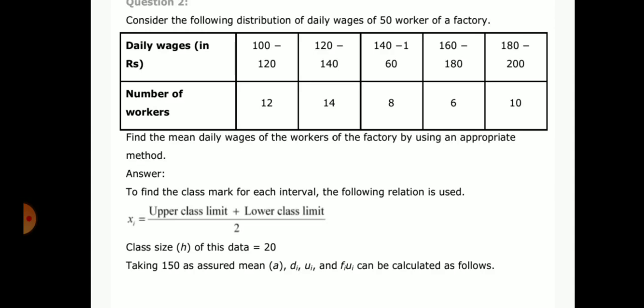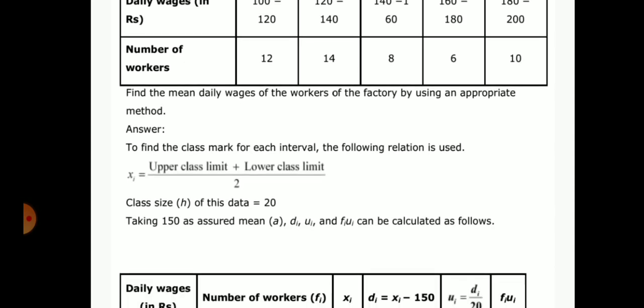Taking 150 as assumed mean A, the values di, ui, and fiui can be calculated as follows.